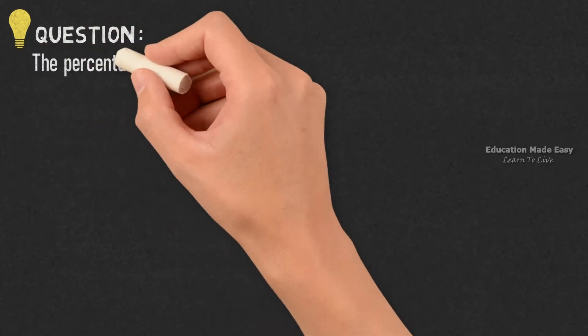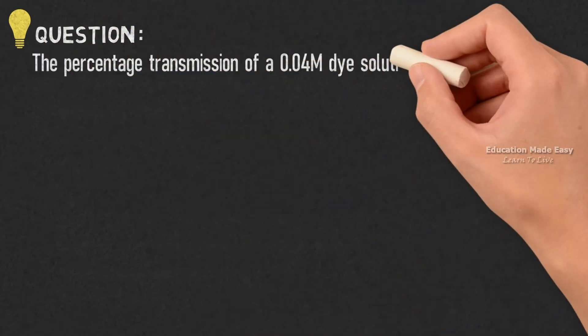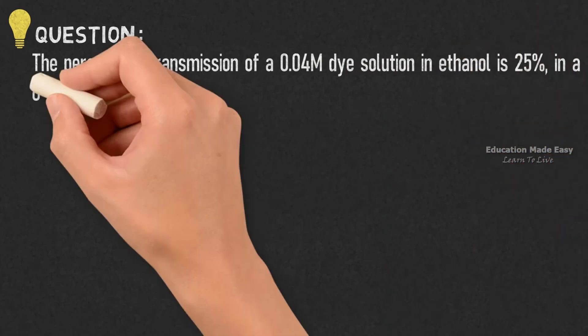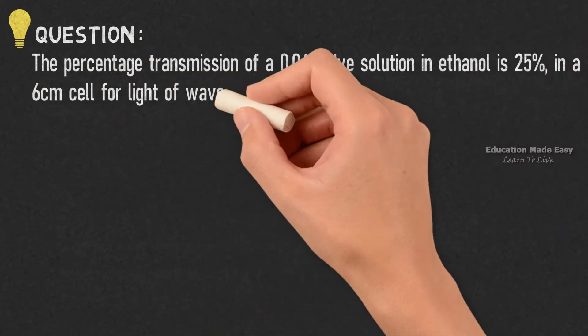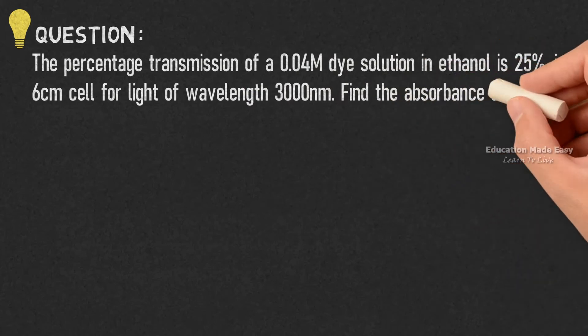Question. The percentage transmission of a 0.04M dye solution in ethanol is 25% in a 6 cm cell for light of wavelength 300 nm.